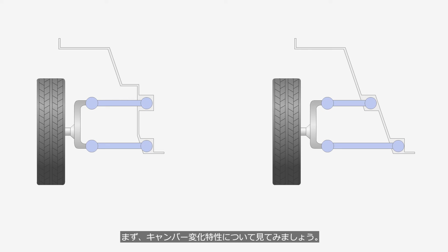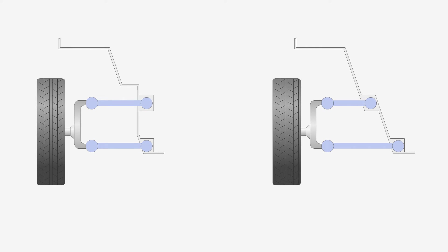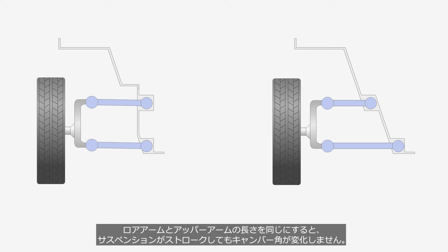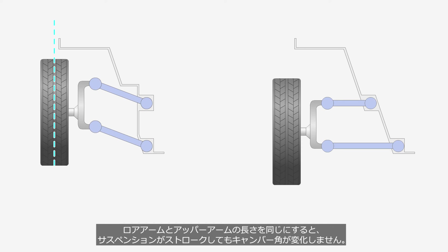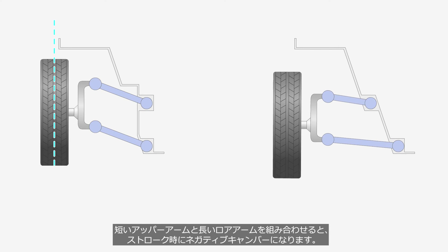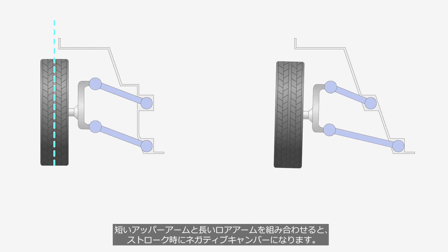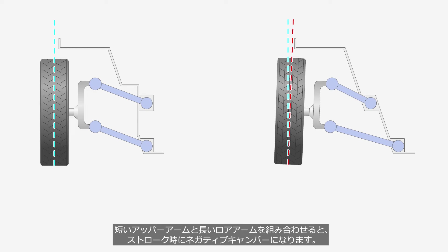First, let's take a look at the characteristics of camber change. If the lengths of the lower and upper arms are equal, the wheels stroke without camber angle change. Combining a shorter upper arm with a longer lower arm results in negative camber during the suspension stroke.